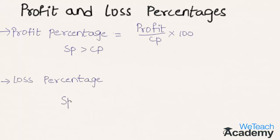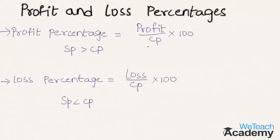When selling price is less than the cost price there is a loss, and the loss percentage is given by loss divided by cost price multiplied by 100. We can observe that both profit percentage and loss percentage are calculated on the cost price, as the selling price depends on the cost price.